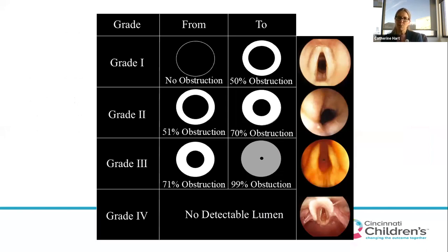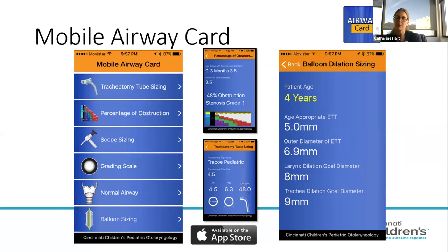This is a depiction of the Meyer-Cotton grading scale — grade one through four — shown both as a cartoon and as actual airway pictures. The grade of stenosis is relevant as we think about what surgical approach we're going to use.